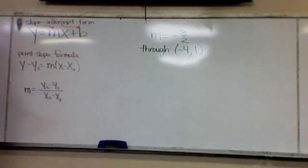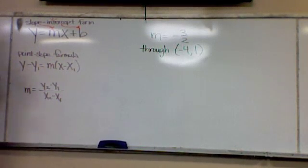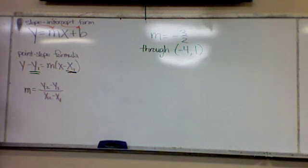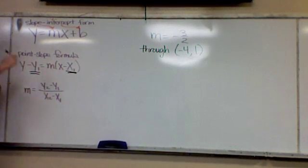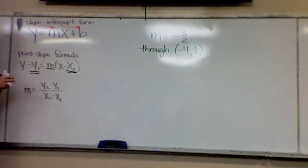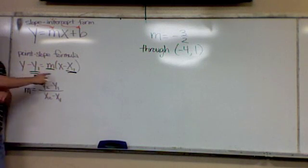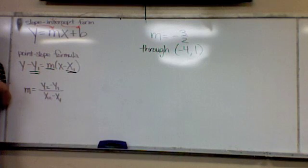In point-slope, you need a point. The point in point-slope is x₁, y₁. And what's the slope in the formula? M. Now, I often get the question: why don't we substitute in for x and y? You leave them alone, because your equation is going to have those two variables in it — they're variables.